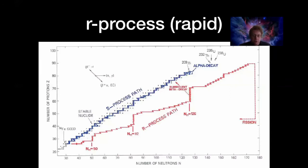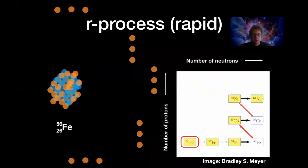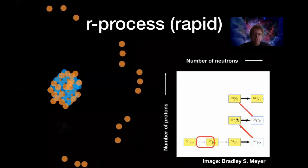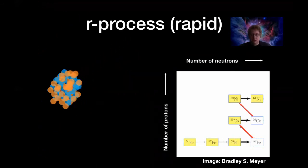Now let's talk about the r-process — the rapid process. It proceeds in much the same way: you add neutrons to seed elements like iron, but this time you add them so fast that you blow way beyond the most unstable elements. If you add neutrons fast enough, you can take a nucleus and push it all the way into very neutron-rich territory, briefly producing extremely unstable nuclei before they decay. This takes a completely different path to form the elements.